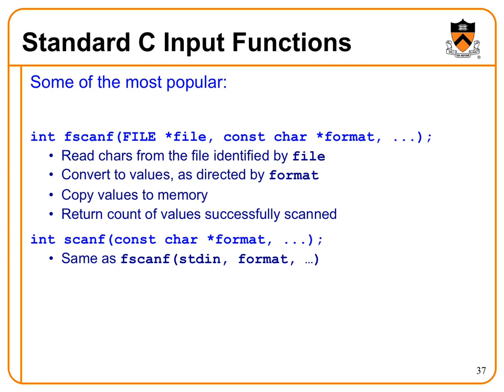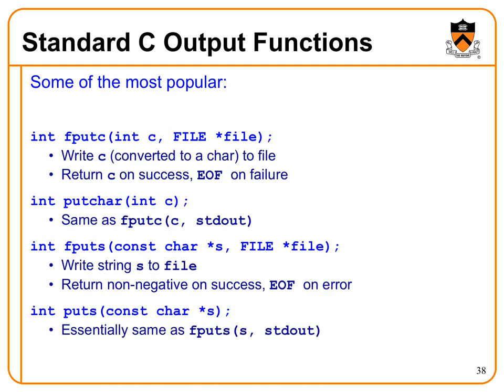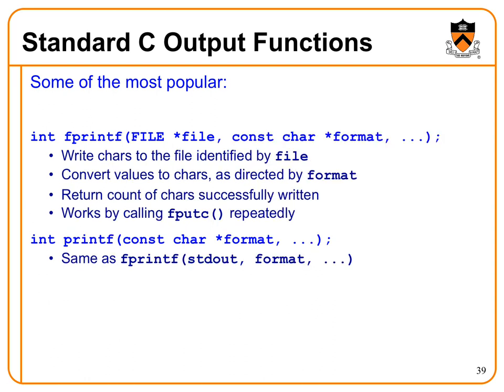Before we leave the input functions, I just wanted to point out our old friend scanf is actually an implicit standard in version of the more general fscanf, which takes a file star in addition to the format string and the pointers and the data to fill in. We've seen potentially fprintf with printing to standard error, but you can now see that this is actually a common paradigm where there are the f versions that are taking a file stream, a file star, in order to be more general.